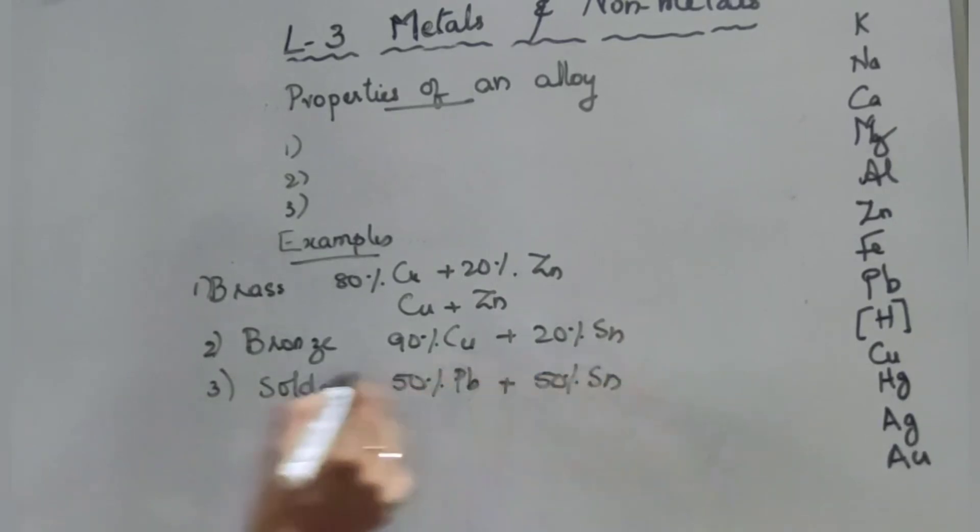Fourth one: steel. That is 99% of iron plus 0.4% of copper plus 0.05% of carbon. No need of remembering this percentage. You can directly write iron plus copper plus carbon, that is steel.